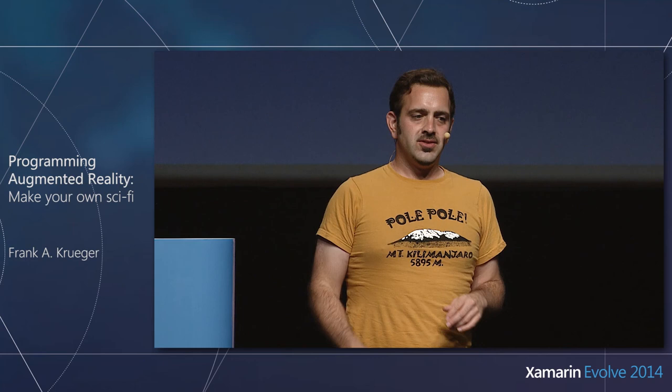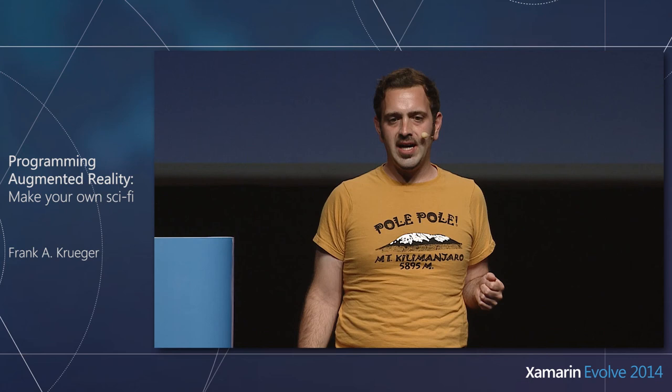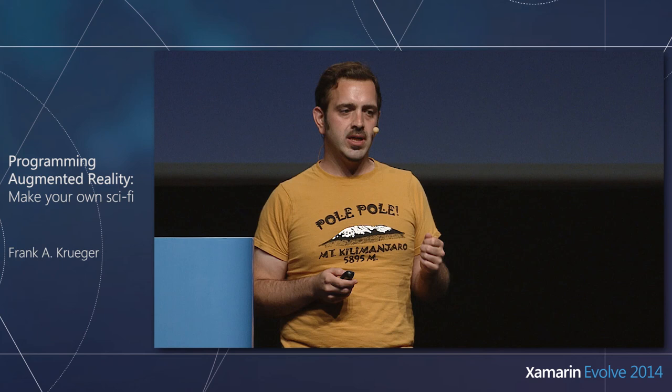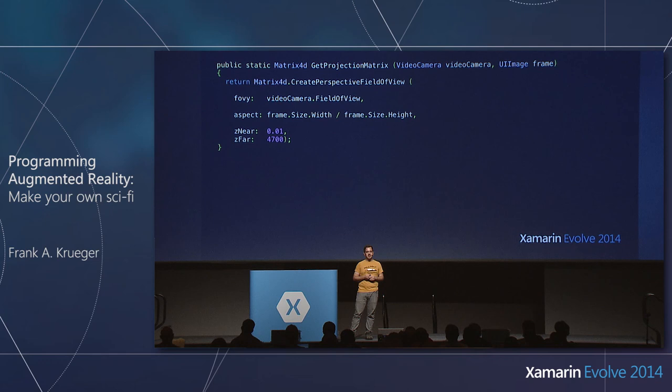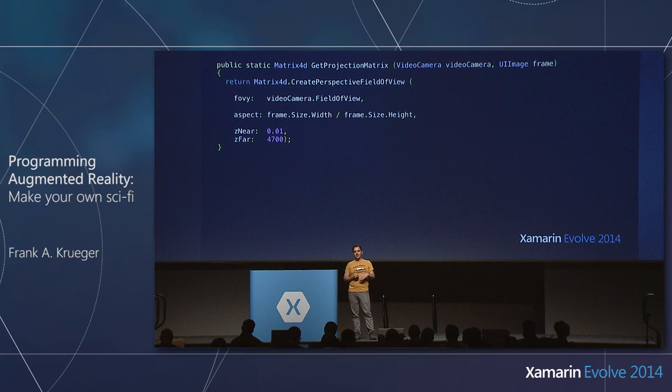Now for some code. Creating the projection matrix is very easy. I use OpenTK — a nice portable library originally meant to map OpenGL onto .NET, but it also comes with vector and matrix math routines which are very convenient. I use it just for that.